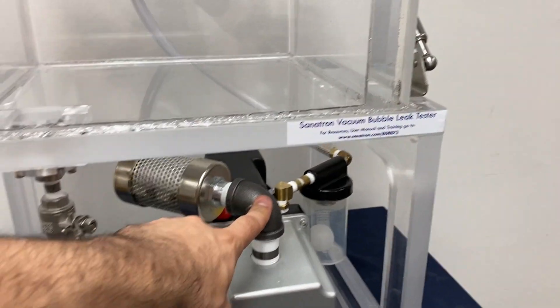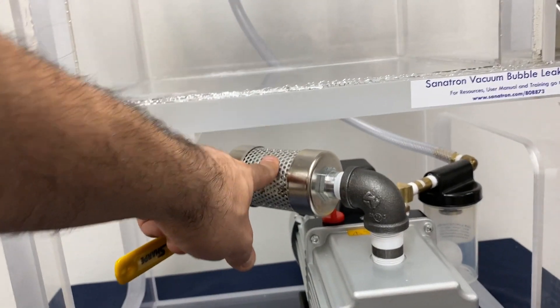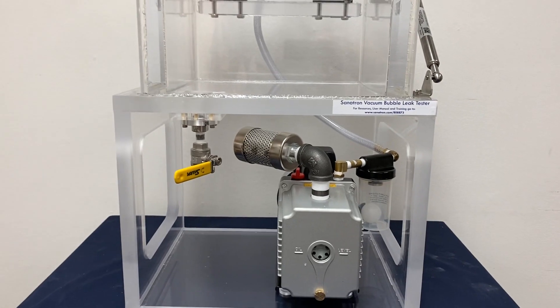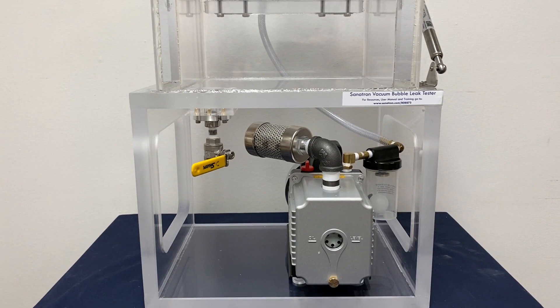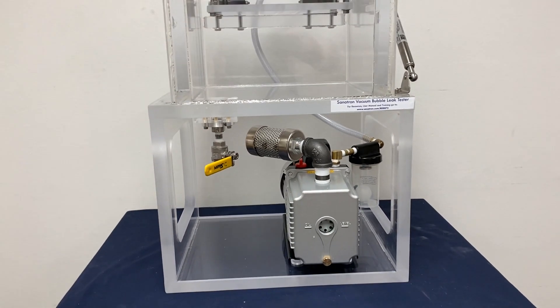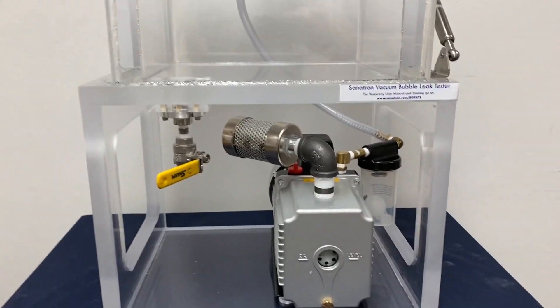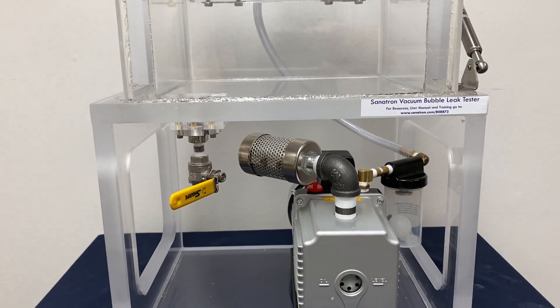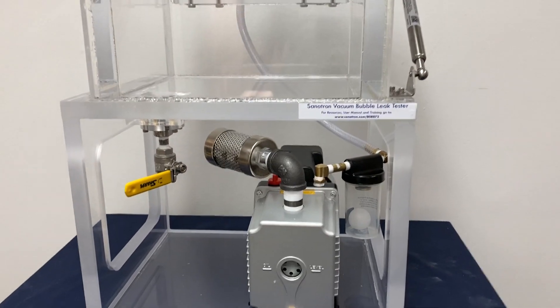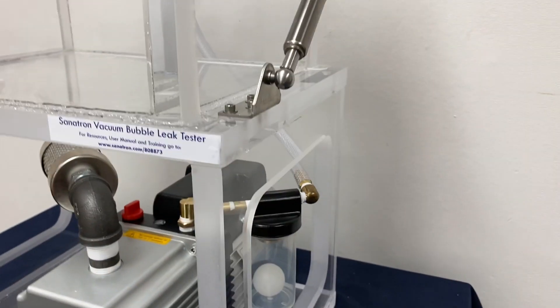Our rotary vane pump comes with an oil mist eliminator or exhaust filter as standard, so you don't have to buy anything extra. This is a fully assembled and ready to go system, and it will keep the exhaust eliminated up to 99.98 percent.